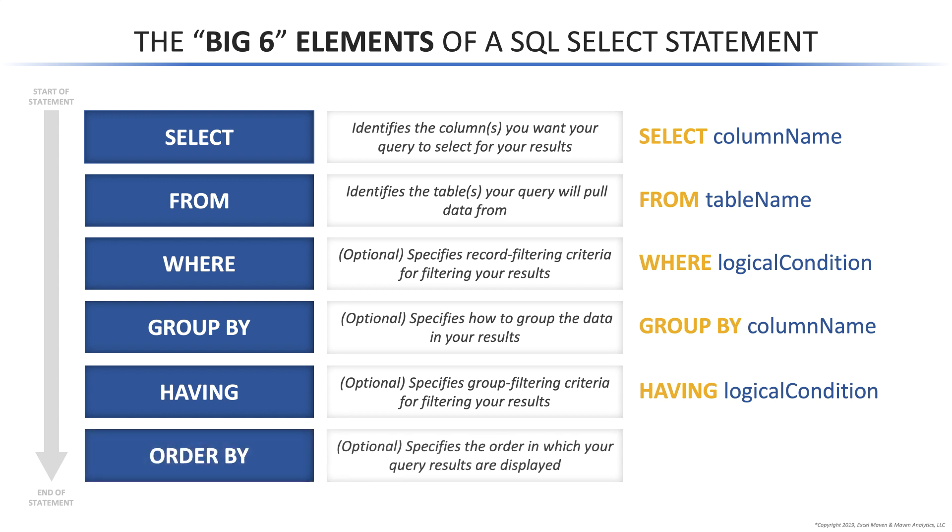Finally, we have ORDER BY. ORDER BY always comes last of the big six, and ORDER BY is how we sort our records. The syntax looks like this: ORDER BY some column name.